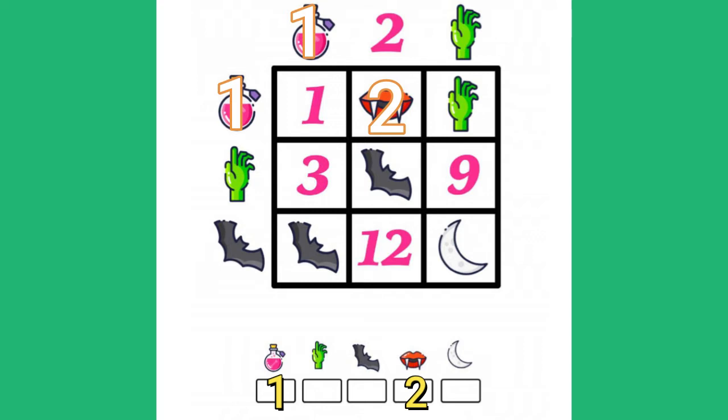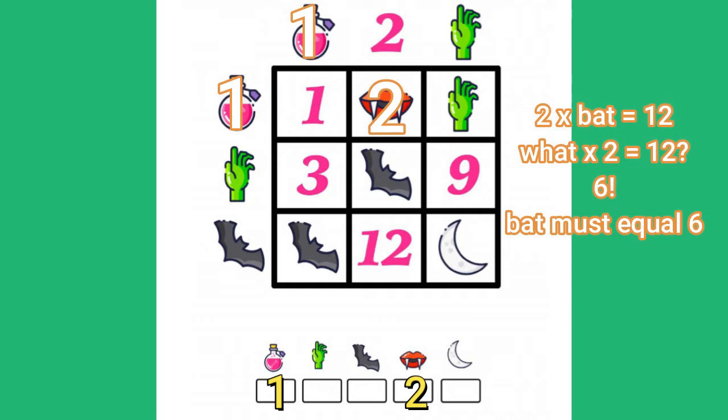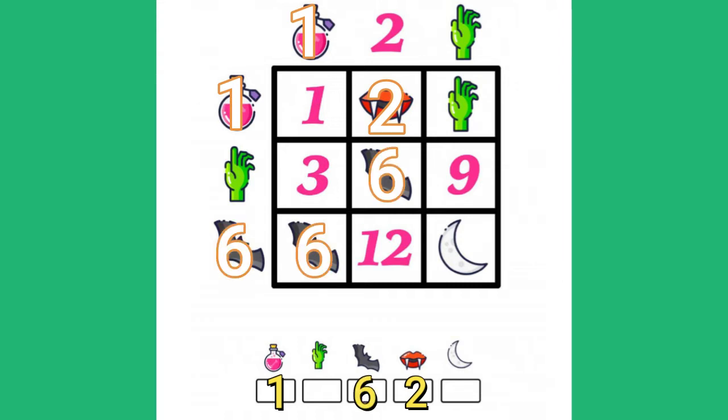I can't figure out the hand just yet. So let's take a look at the bat. I know that in the bottom it says 12. 2 times bat equals 12. 2 times 6 equals 12. So the bat must be 6.